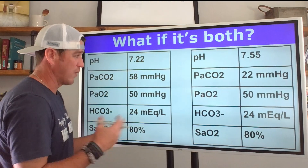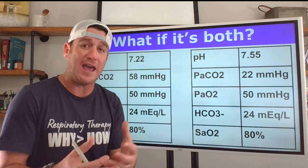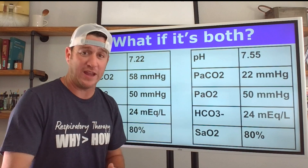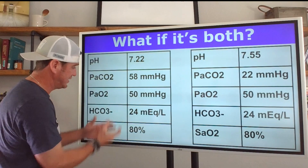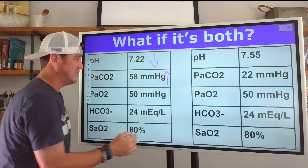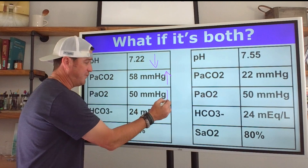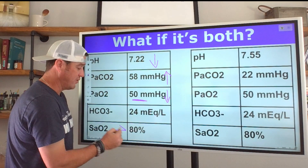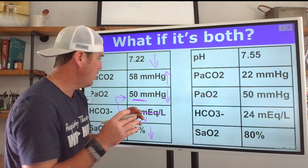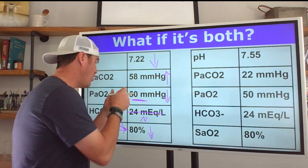Let's look at what happens when both CO2 and O2 are out of normal range. We have a pH that is decreased, a CO2 that is increased — so yes, there's a ventilation disturbance. The PaO2 is 50 mmHg — that's low — and saturation is low because of that. Bicarb is normal, so we're not concerned there. We have a patient who is acidotic due to the high CO2 level, and they are also hypoxemic.